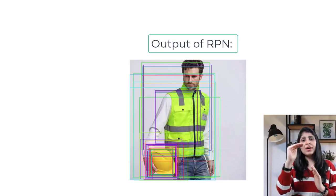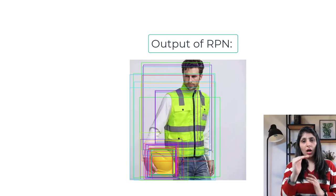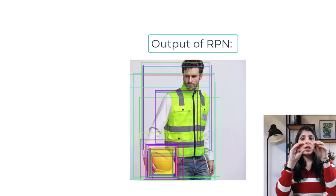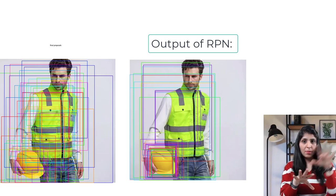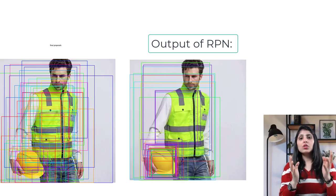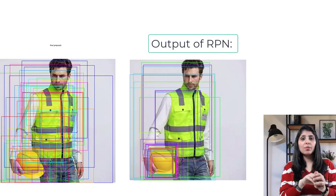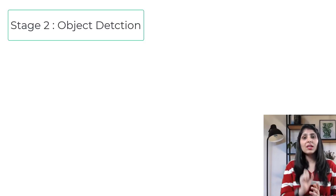To summarize so far: the feature extractor extracts features, the RPN identifies regions where objects are present as bounding boxes, and ROI Pooling normalizes them to the same shape. The output of ROI becomes the input to the object detection branch, which is the second stage.